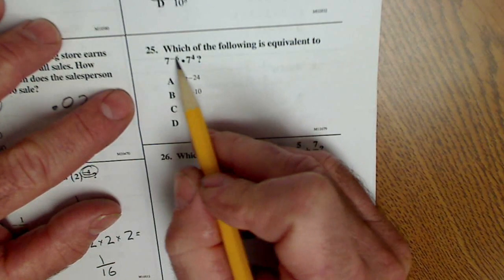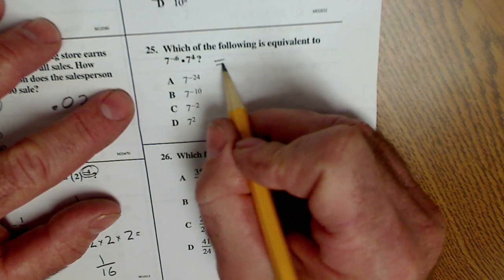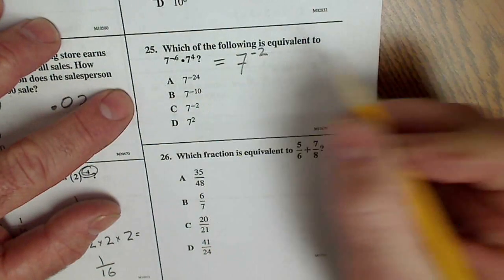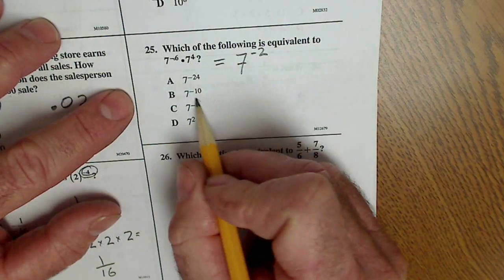Another rule of exponents. When I'm multiplying numbers, I add these exponents. So, this is going to give me 7 to the negative 2. There's my answer there.